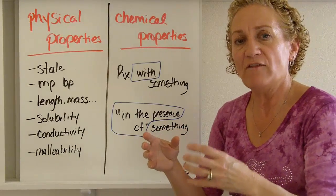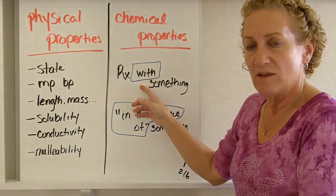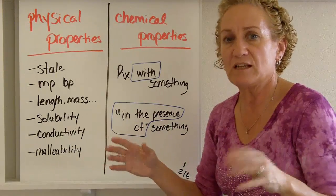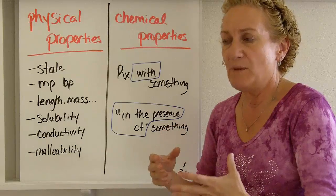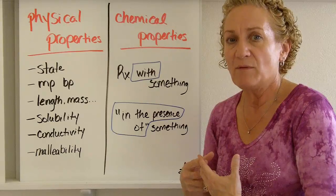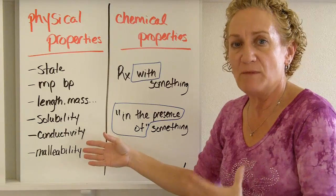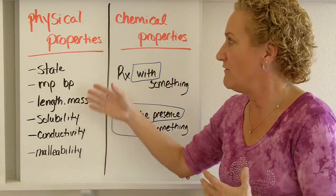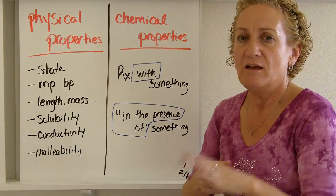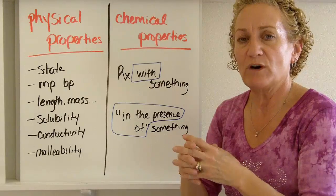A chemical property is the way something reacts with something else, or in the presence of something else. Key words to look for: 'with' or 'in the presence of.' If it says 'in the presence of a base' or 'in the presence of an acid,' you're probably talking about a chemical property. Physical properties are things you can see, hear, smell, taste, and feel — please don't taste anything in chemistry lab. Chemical properties describe how things react with one another.